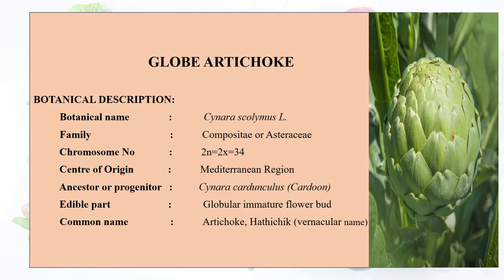The ancestor or progenitor of globe artichoke is Cynara cardunculus, also called as cardone. The edible part, which was previously asked in papers, is the globular immature flower bud, also called as capitulum. Common names include artichoke.